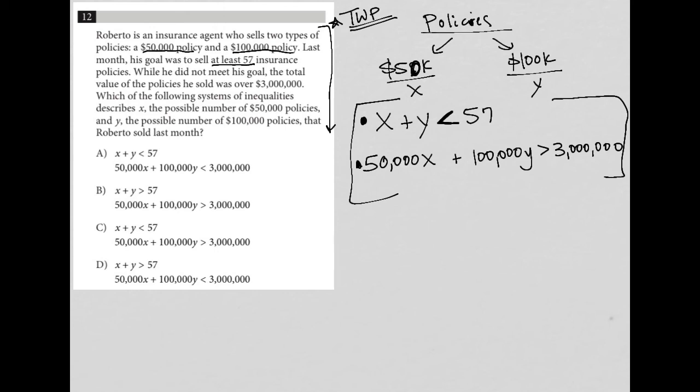Choice A: X plus Y less than 57, so that looks good. The second part of choice A: 50,000X plus 100,000Y less than 3 million. Well, that's not true. We want it to be greater than, because he sold over 3 million. So answer choice A is gone.